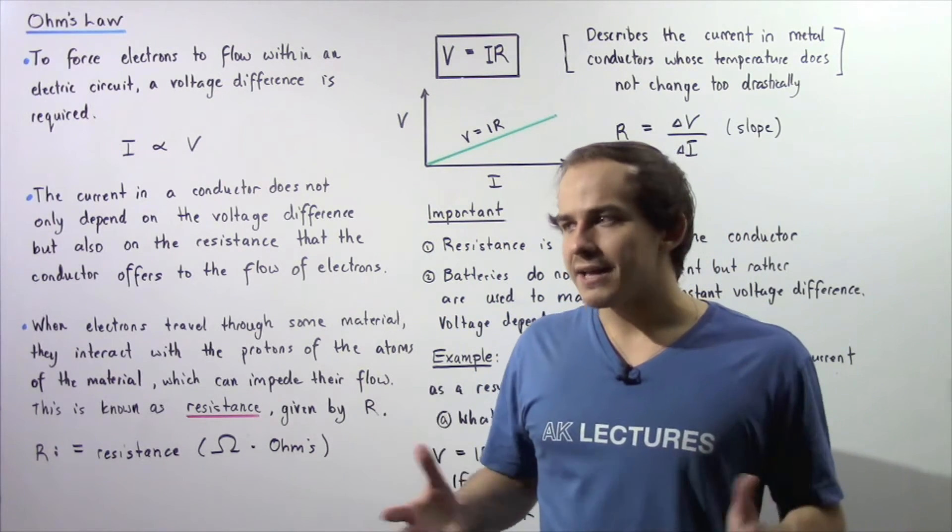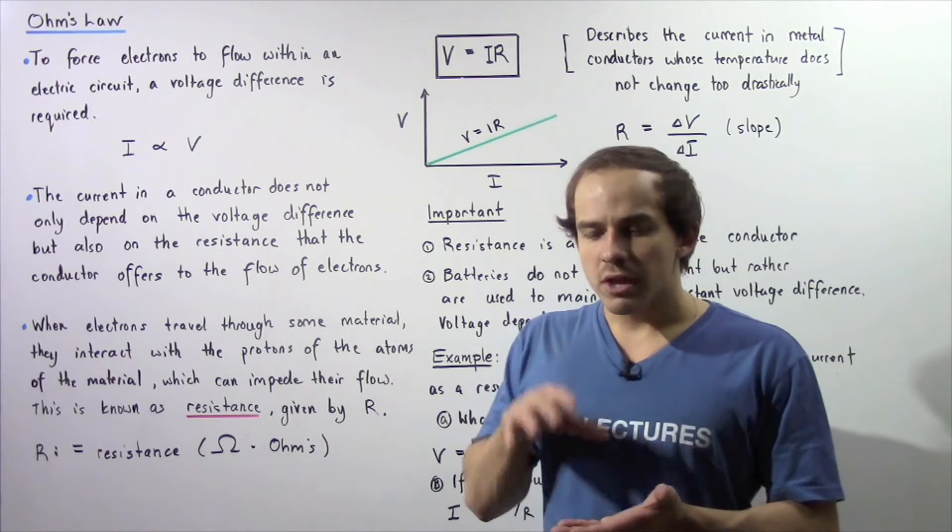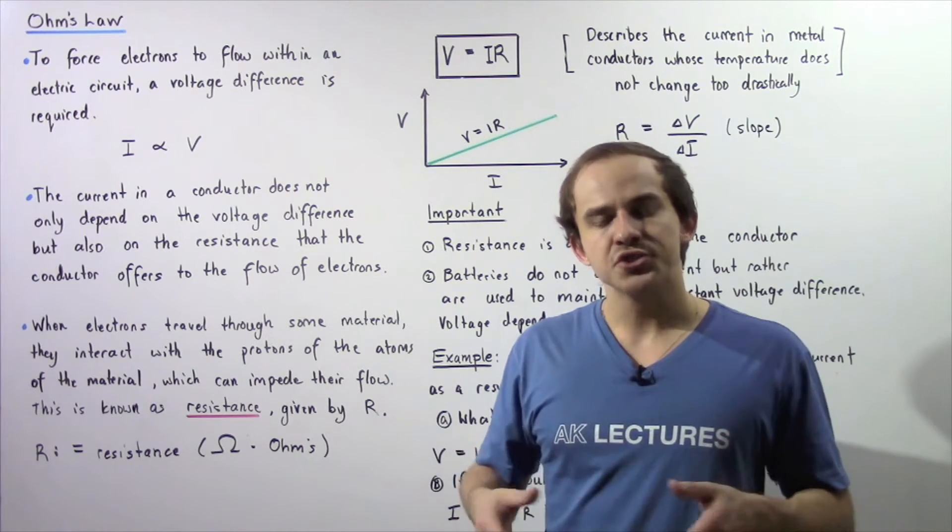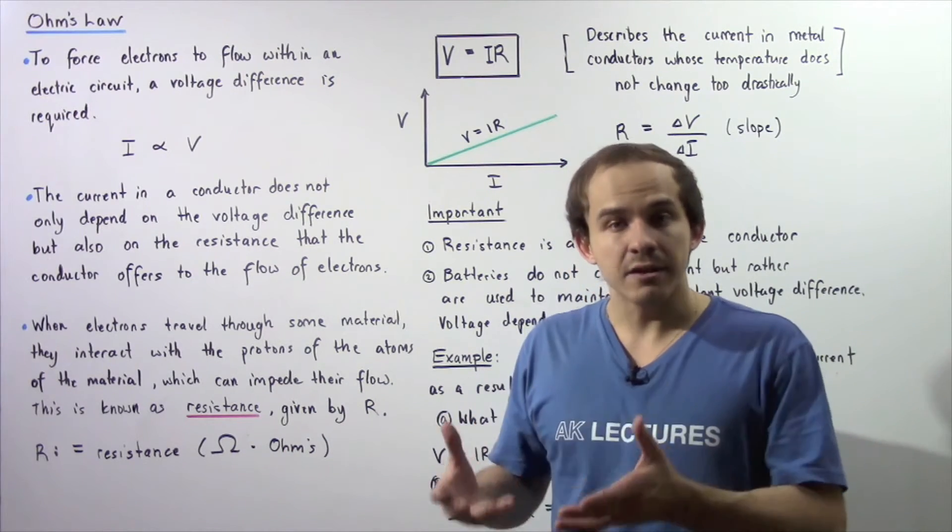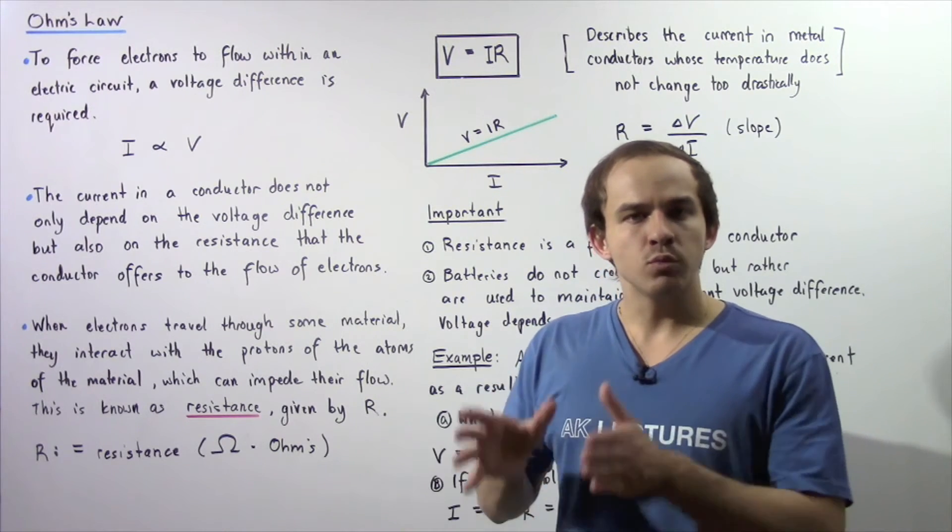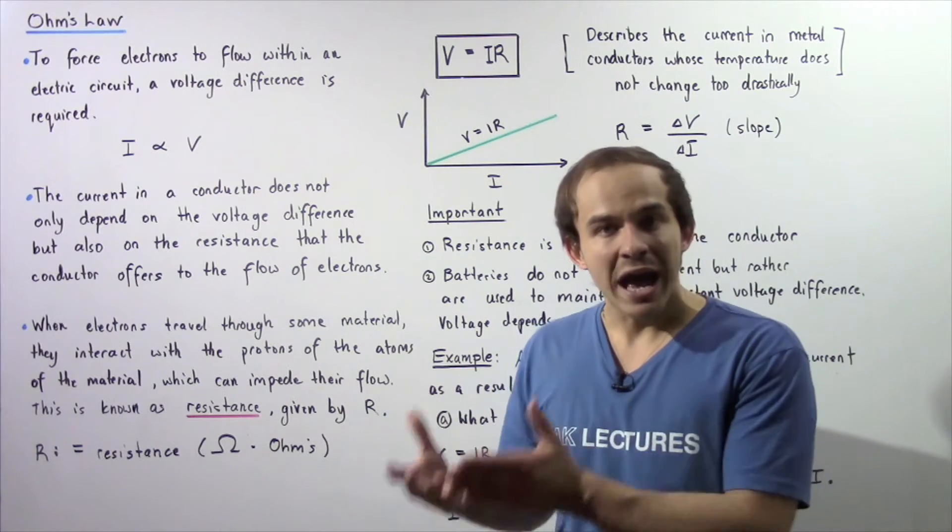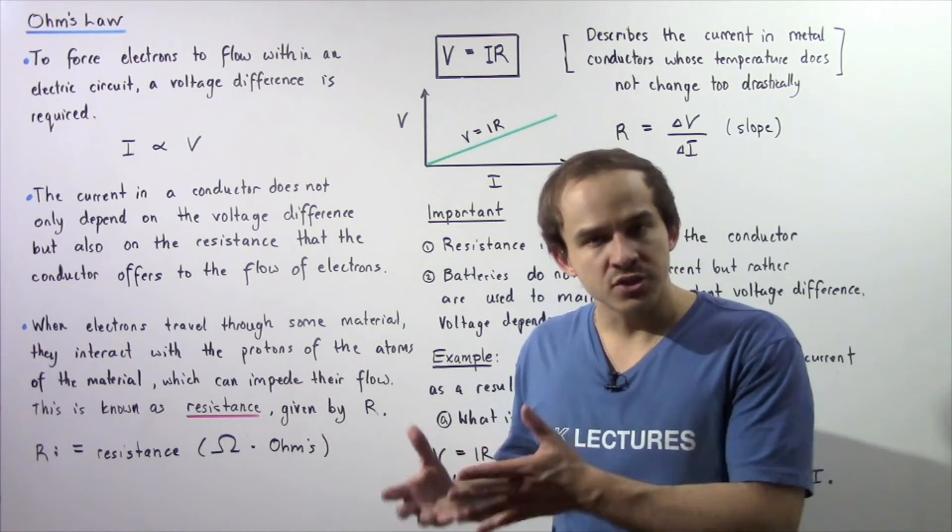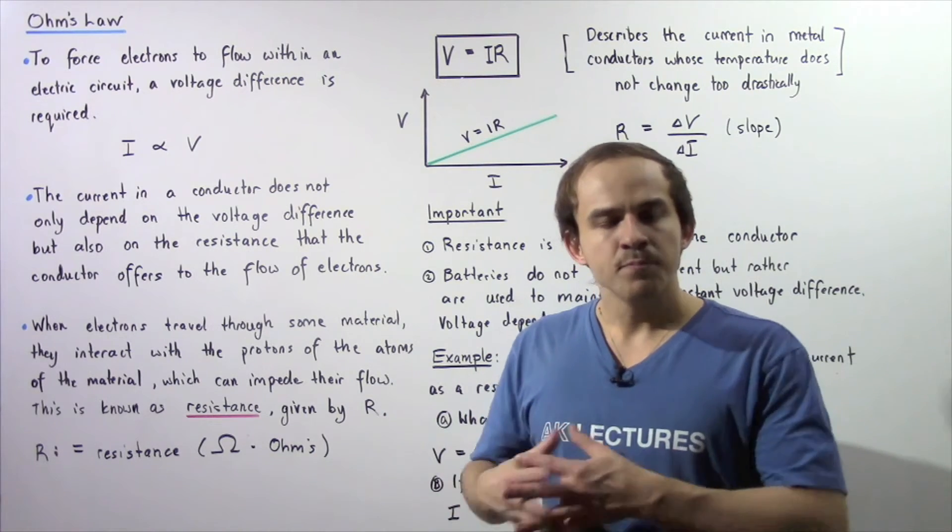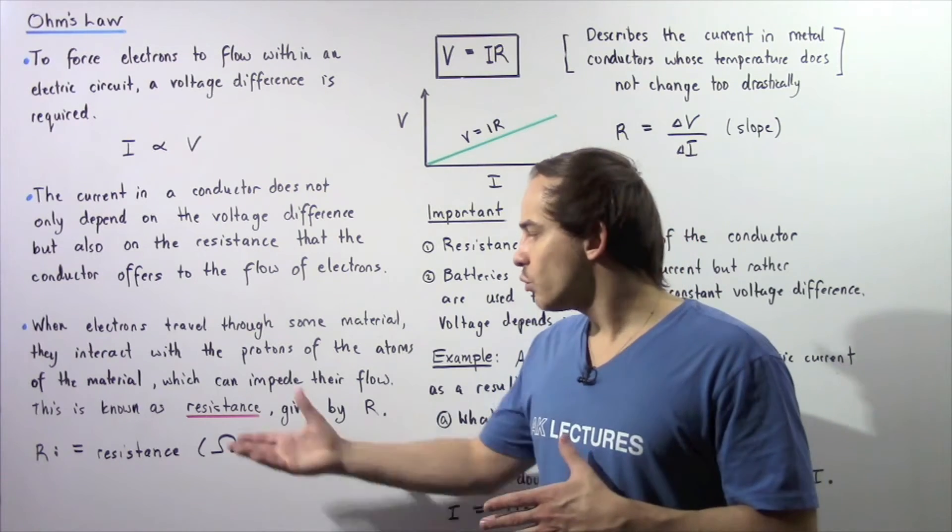So what exactly is resistance and where does resistance come from? Well, when electrons travel through conducting material, they interact with the atoms, with the electrons and protons of the atoms found within that particular conducting material. Those interactions, which are electric interactions, will essentially impede and slow down the flow of electrons. This concept is known as resistance.